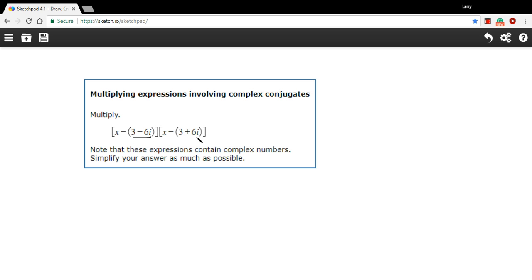3 minus 6i and 3 plus 6i are conjugates of each other. They're binomial terms with a different sign in between. So we're going to do some work just multiplying these out. And I think the way that I would recommend doing this first is to think of this as one thing, and this as one thing, and foil them to start with.